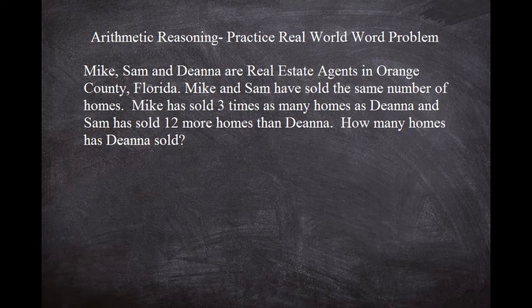What's going on everybody, J Lawson here and I'm back with another video — this time another practice ASVAB math word problem, arithmetic reasoning. We're going to be doing a real-world situation problem with three variables. It says: Mike, Sam, and Deanna are real estate agents in Orange County, Florida. Mike and Sam have sold the same number of homes. Mike has sold three times as many homes as Deanna, and Sam has sold 12 more homes than Deanna. How many homes has Deanna sold?